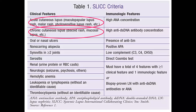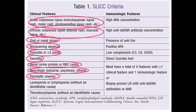Alopecia, which was previously only a symptom (not a criterion), was included in SLIC as non-scarring alopecia, since most patients complain of it. Other SLIC clinical criteria include: synovitis of more than two joints, serositis, renal affection, neurologic affections, hemolytic anemia, leukopenia or lymphopenia, and thrombocytopenia. Importantly, hemolytic anemia, leukopenia, lymphopenia, and thrombocytopenia — which were all one criterion in ACR — are now three separate criteria in SLIC.